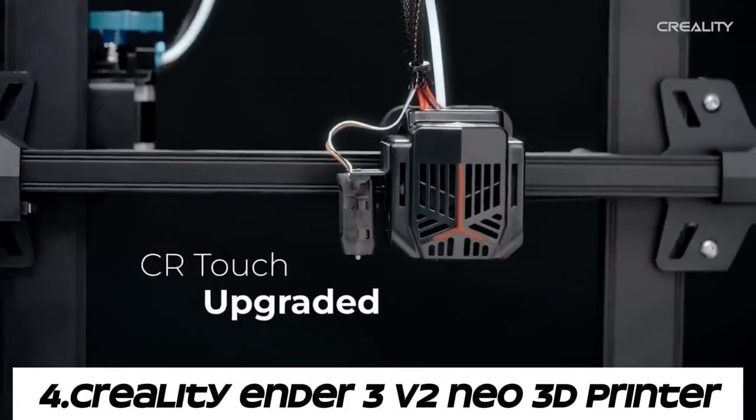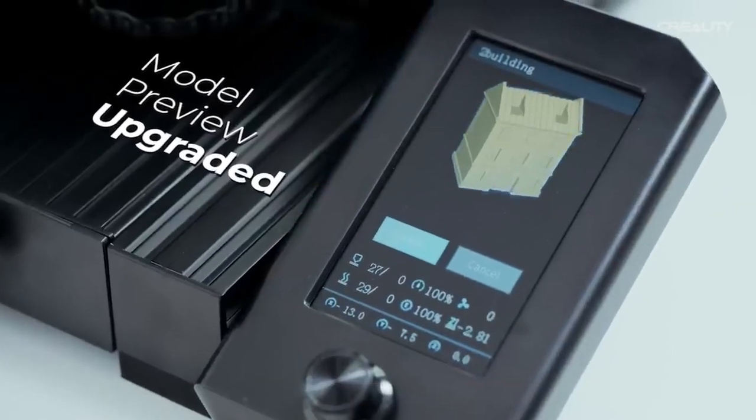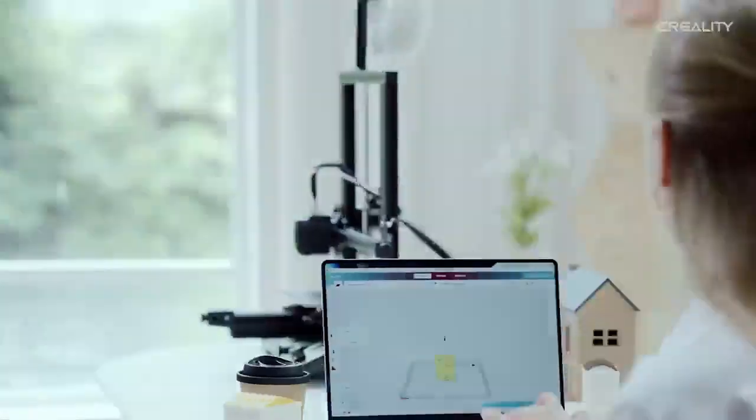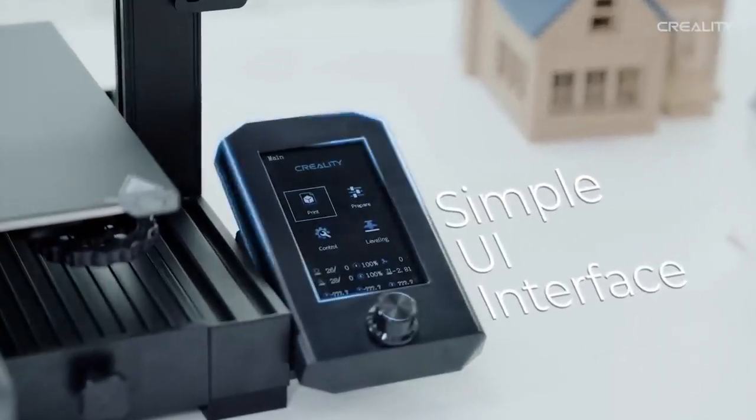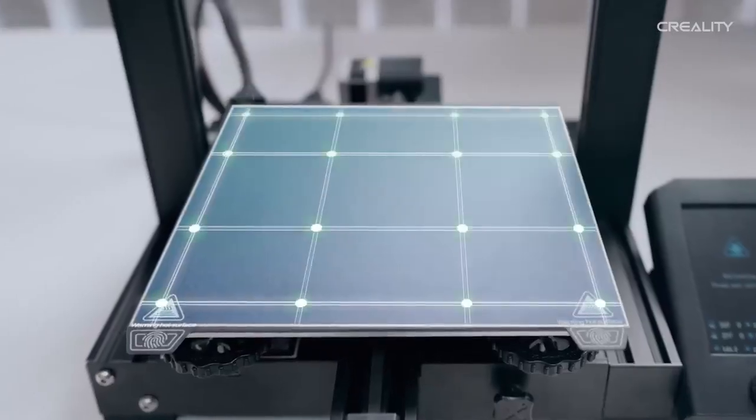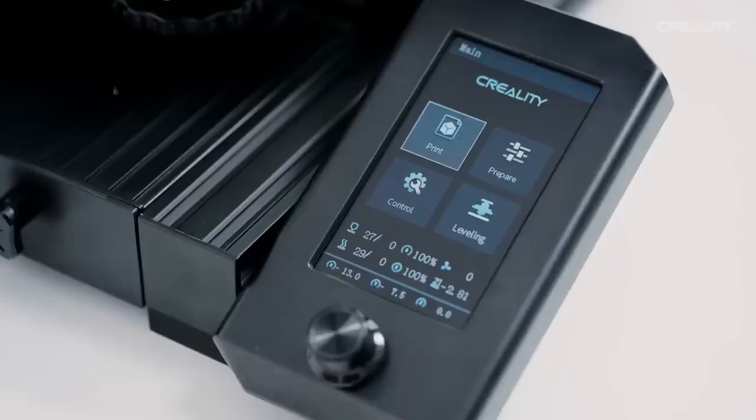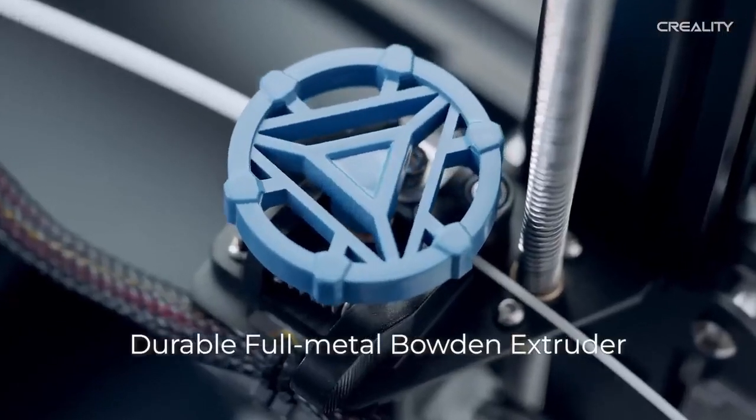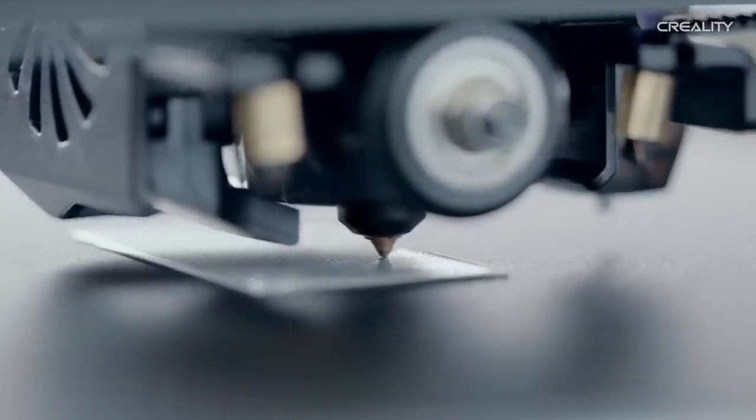Number four: Creality Ender 3 V2 Neo 3D printer. The Creality Ender 3 V2 is an upgraded version of the popular Ender 3 3D printer. It retains many of the features that made the original Ender 3 successful, such as a sturdy frame design, a build volume suitable for most hobbyist projects, and a Bowden extruder setup. The V2 model introduces improvements such as a new 32-bit silent motherboard, a redesigned user interface with a color screen, a new toolbox for storing tools and accessories, and a better belt tensioning system. Overall, it's a solid choice for beginners and experienced users alike.